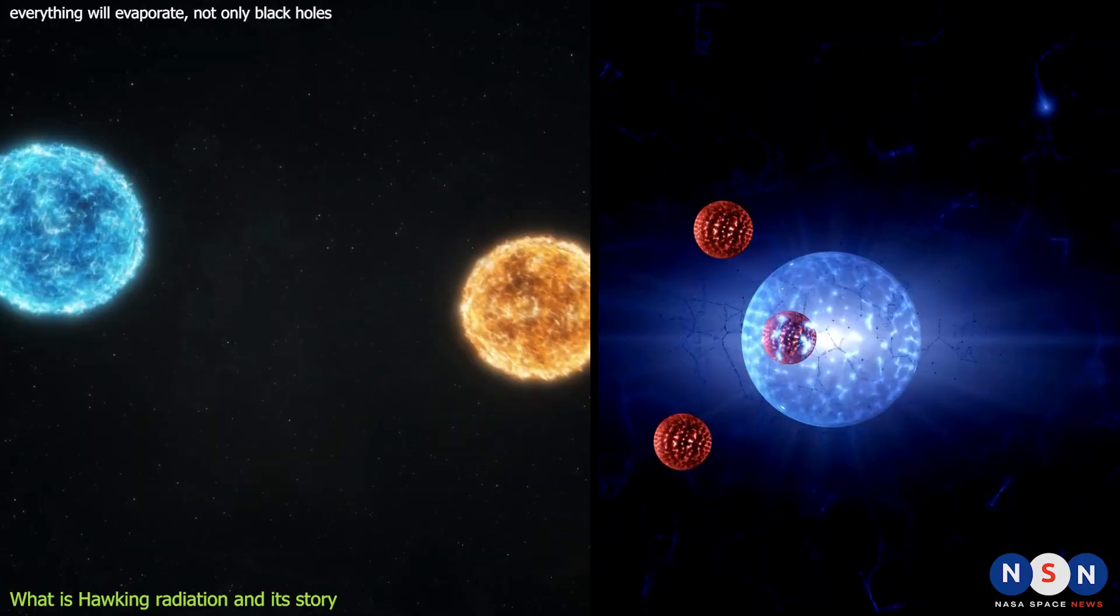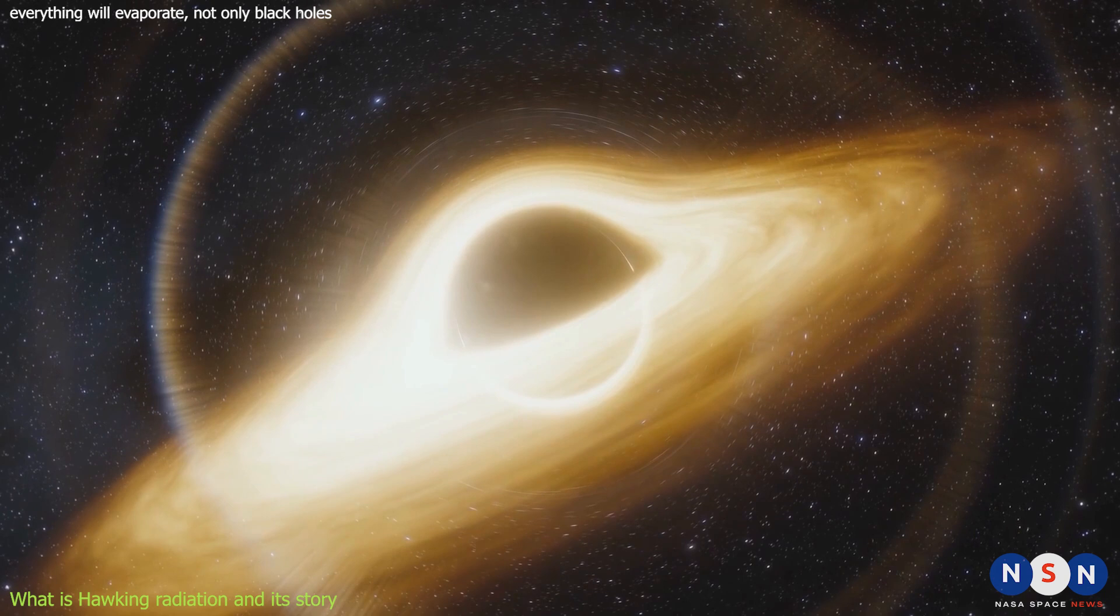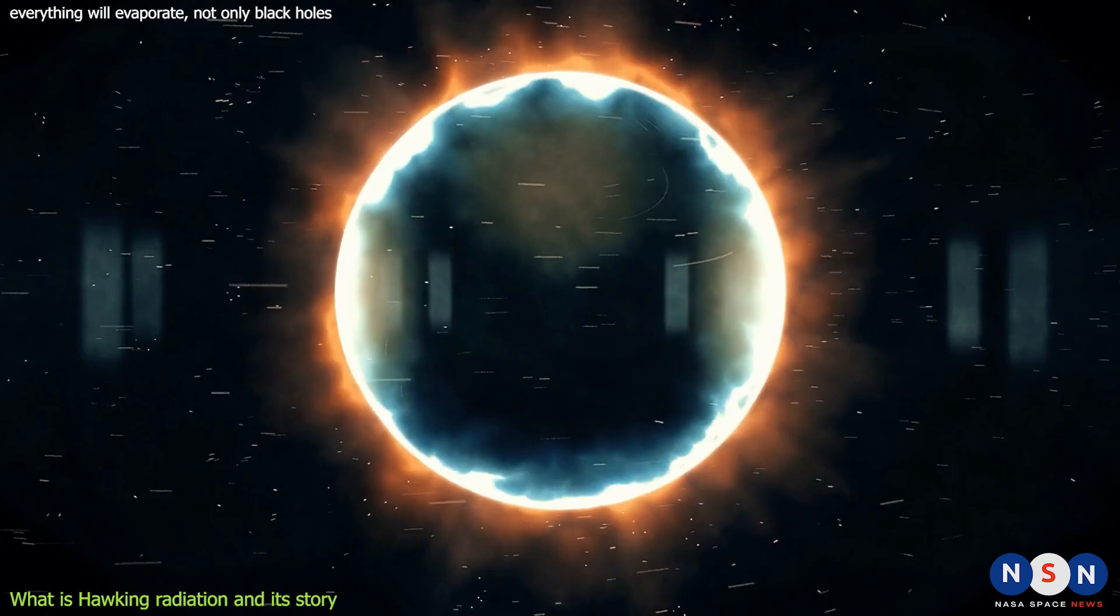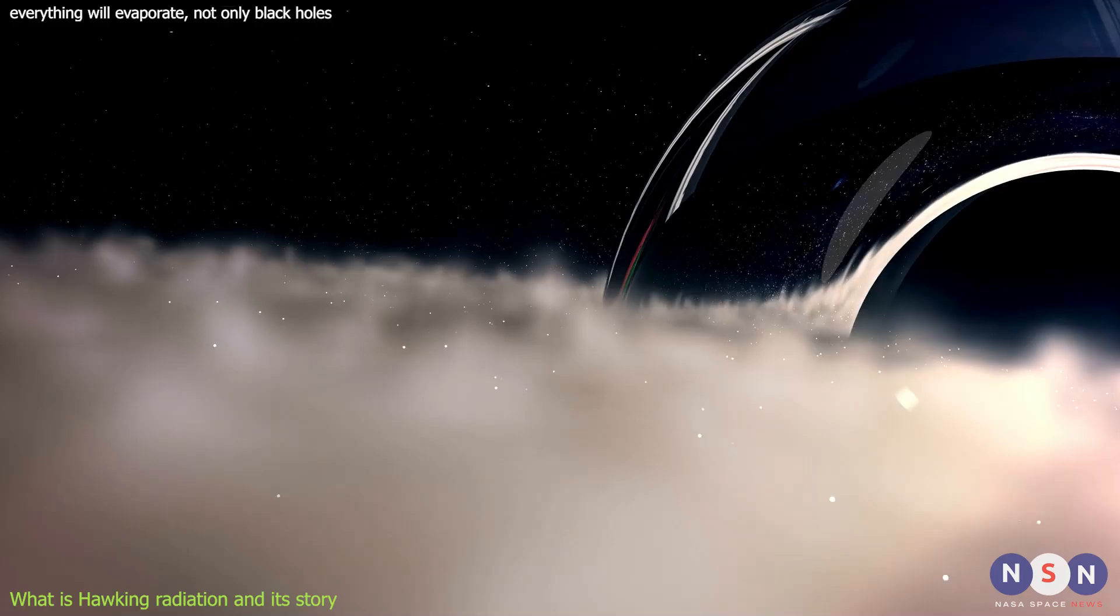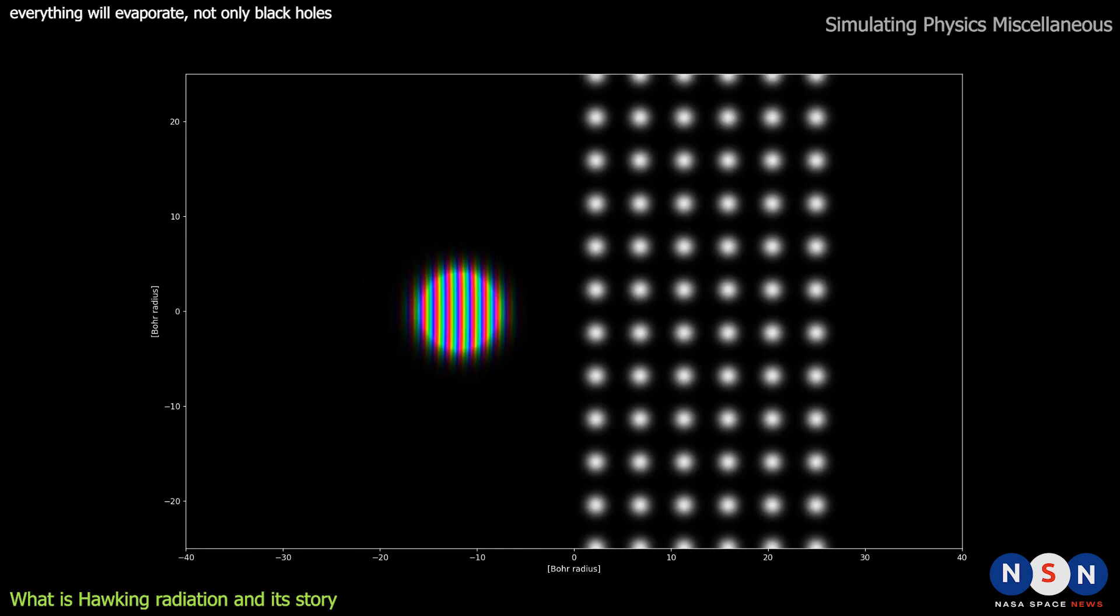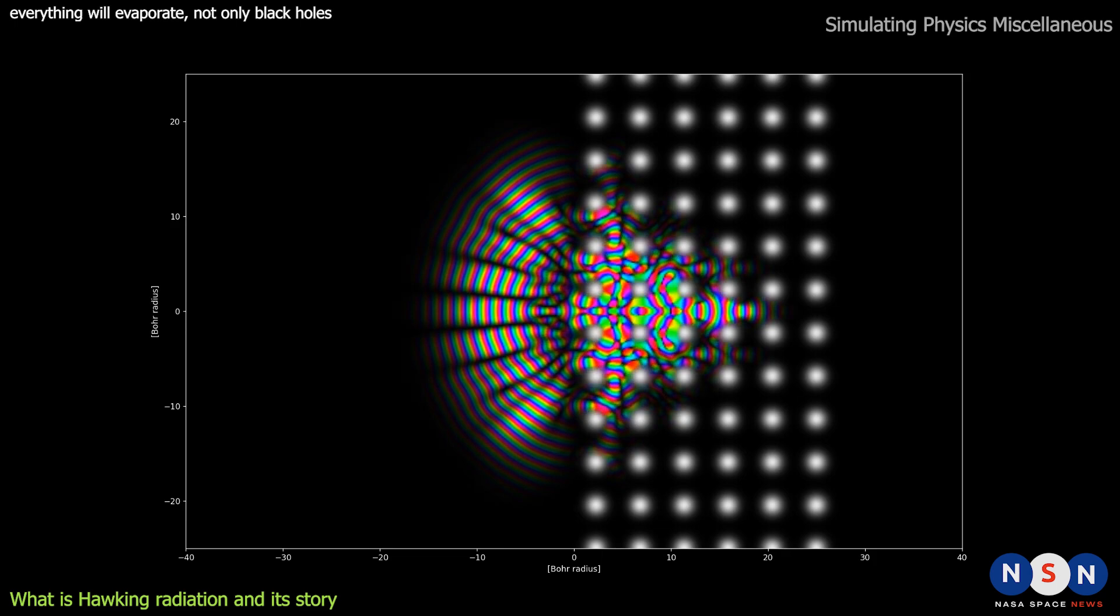Both theories have been tested and confirmed by many experiments, but they are incompatible with each other. One of the places where this conflict becomes apparent is near the event horizon of a black hole. According to general relativity, nothing can escape from beyond the event horizon, not even light. This means that black holes are perfectly black and have no temperature. However, according to quantum mechanics, empty space is not really empty.